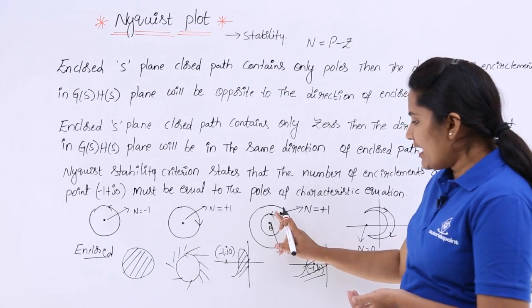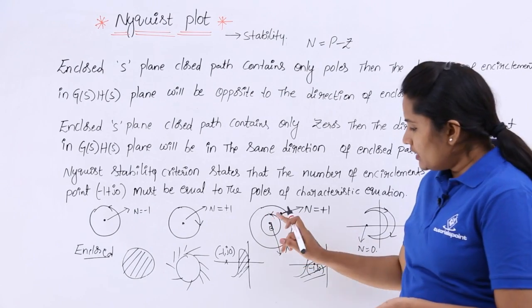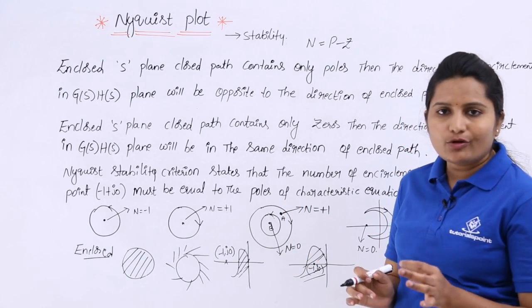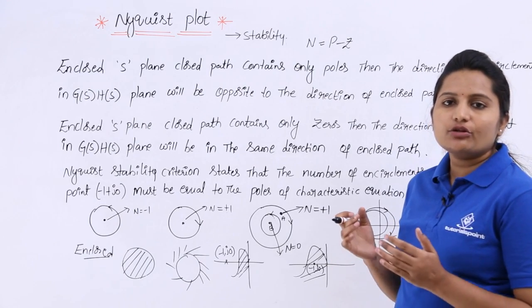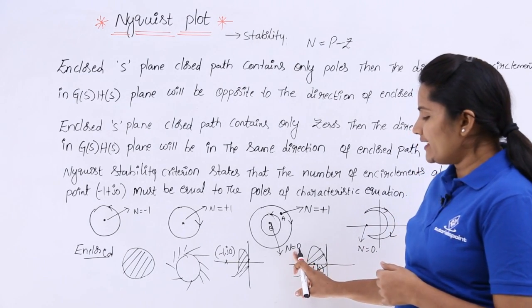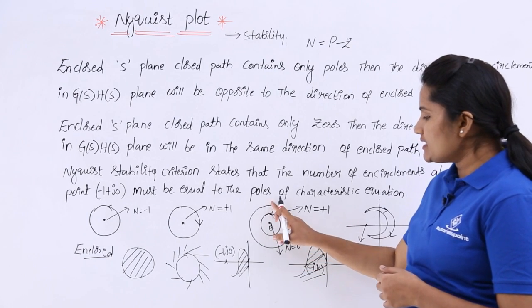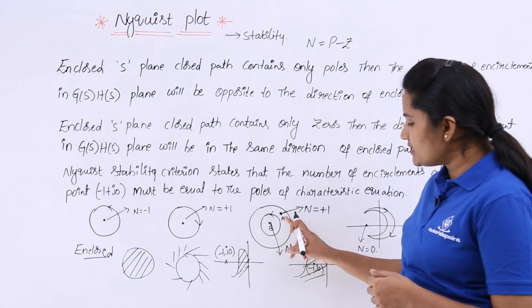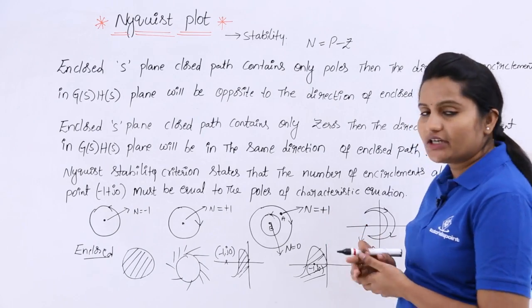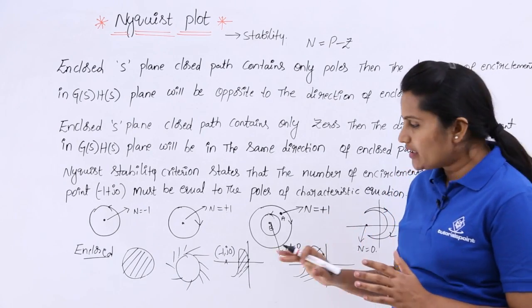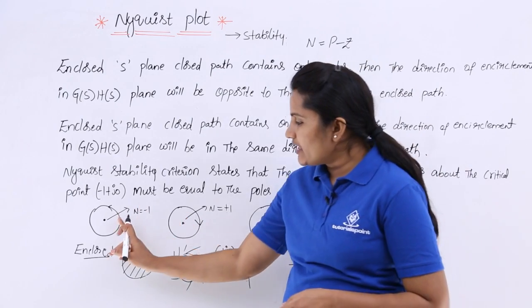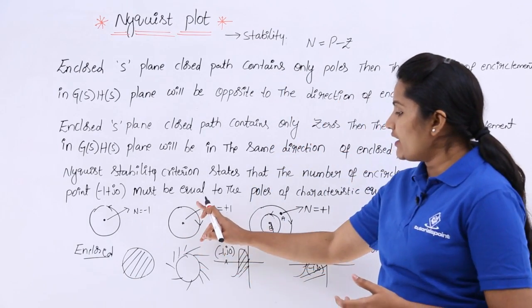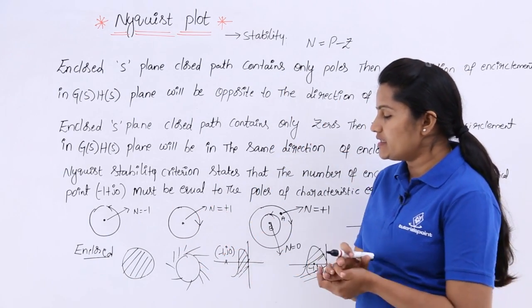When you have both poles and zeros, this point has two encirclements — one positive and one negative. Since both poles and zeros are equal, N = P - Z gives N = 0 for this point. For the outside circle, if you observe it is in clockwise direction, so N is equivalent to plus 1. Wherever you see anti-clockwise direction, take N = -1, and wherever you see clockwise direction, take N = +1.